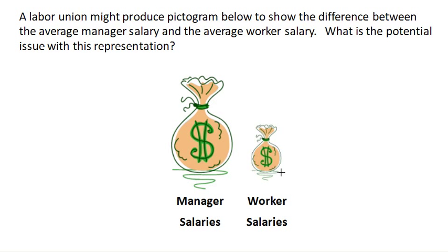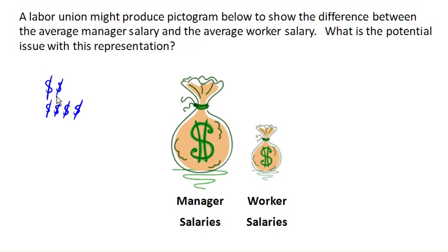Now there are some representations where you would use some kind of picture, like a dollar sign to represent money, and then use a certain number of them to represent relative sizes. That's a lot more acceptable because then it really is the length of the picture that corresponds with the quantities.